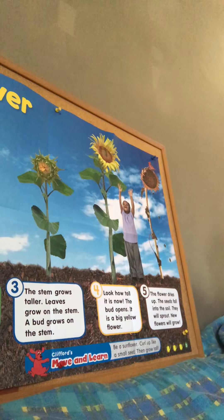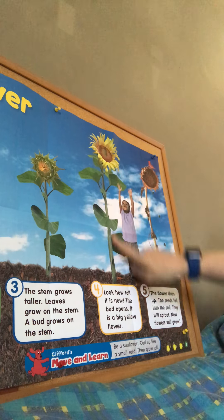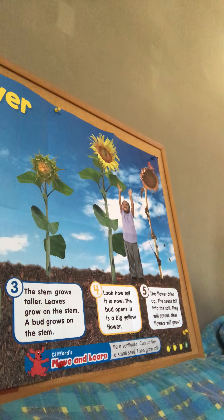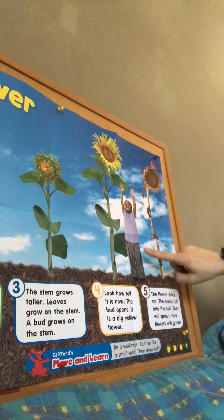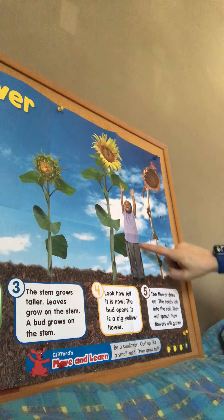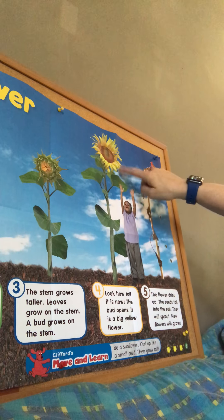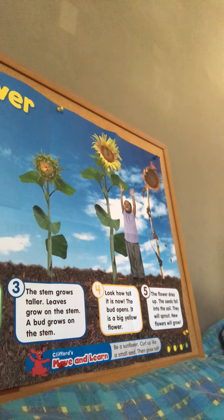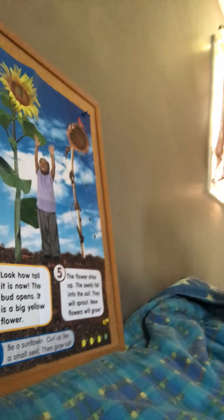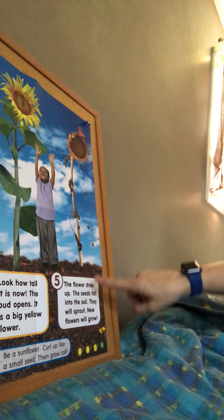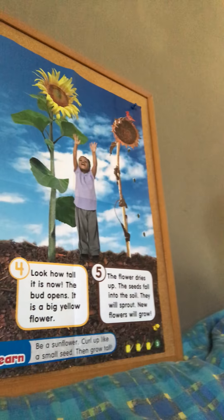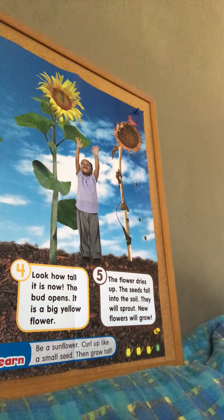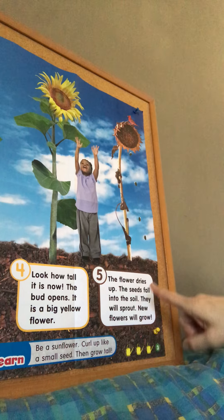Number four says look how tall the sunflower is now — it's big and yellow and it's open, so it's a flower. And look at this little boy — oh my goodness, it is bigger than him!